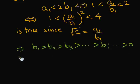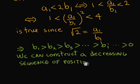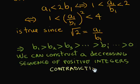Obviously, we could repeat this process ad infinitum, finding an infinitely decreasing sequence of positive integers. And that is a contradiction. So the square root of 2 cannot be rational. Therefore, it is irrational.